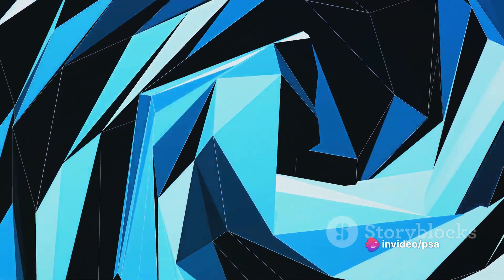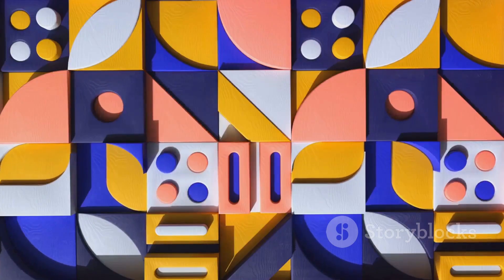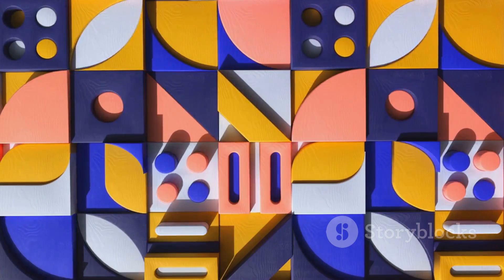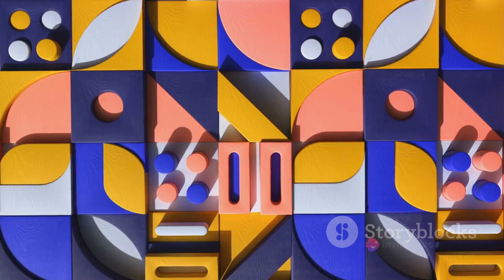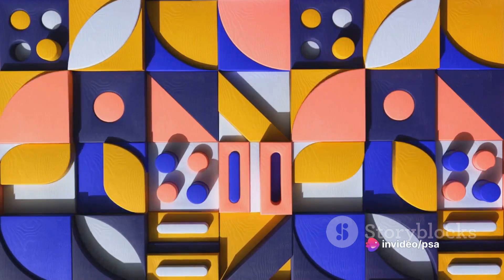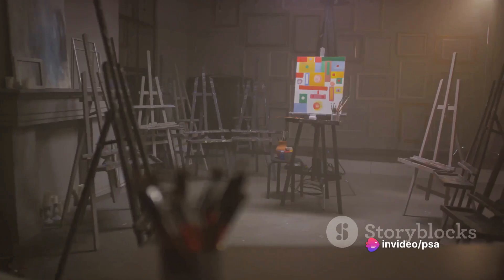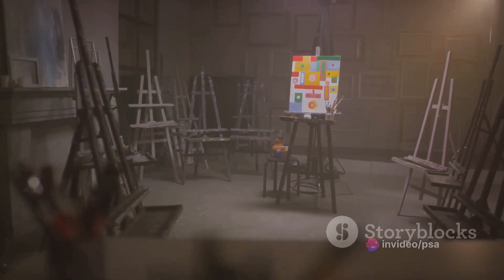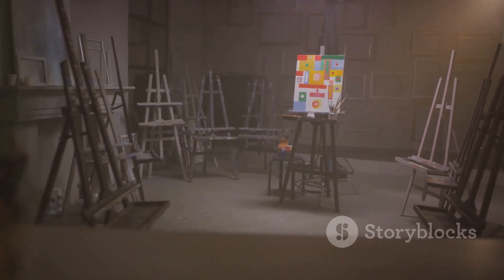Moving on to art, Euclidean geometry plays a crucial role here, too. Artists often use geometric shapes and lines in their work to create balance and harmony. Take cubism, for instance, a style of art pioneered by Picasso, which uses geometric shapes to depict reality from multiple perspectives. Or consider the intricate geometric patterns in Islamic art, where the use of circles, squares, and polygons creates mesmerizing designs.